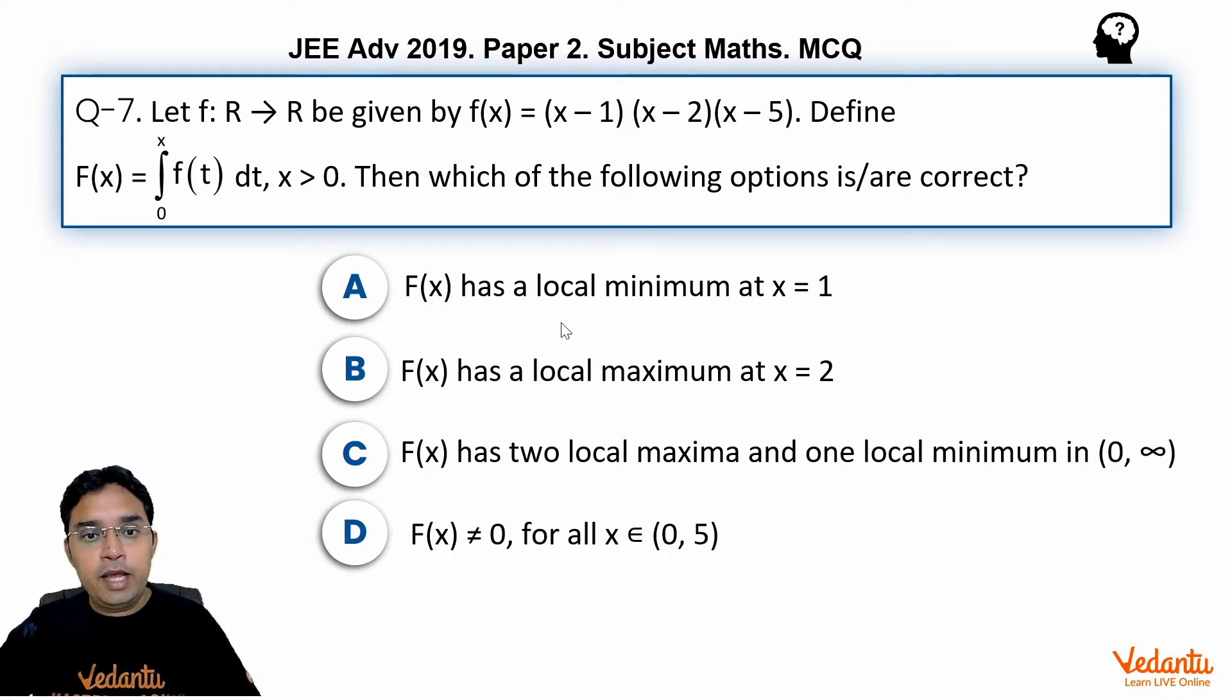Then which of the following options is or are correct? A: F(x) has local minimum at x = 1. B: F(x) has local maximum at x = 2. C: F(x) has two local maxima and one local minimum in (0, ∞). D: F(x) ≠ 0 for all x belongs to (0, 5). So let us see how to solve this question.